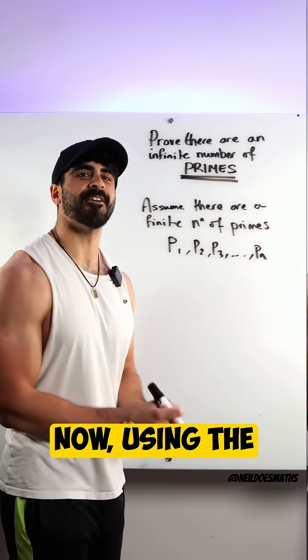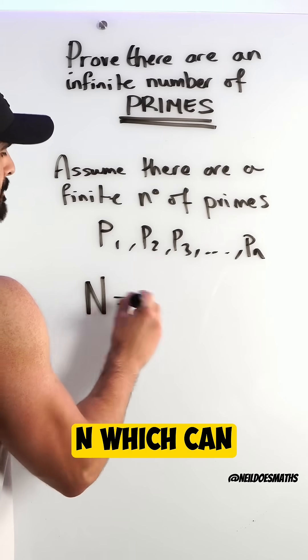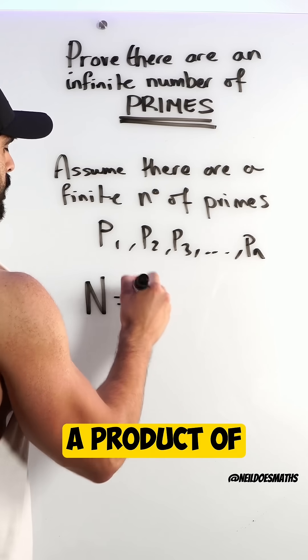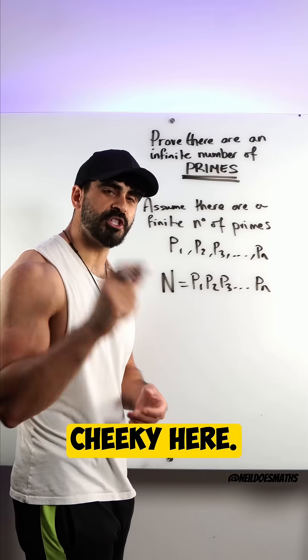Now using the fundamental theorem of arithmetic, I can find a number N which can be written as a product of all of these primes: p1·p2·p3···pn. Now I'm gonna do something cheeky here—all I'm gonna do is add 1 to N. N+1 becomes p1·p2·p3···pn + 1.